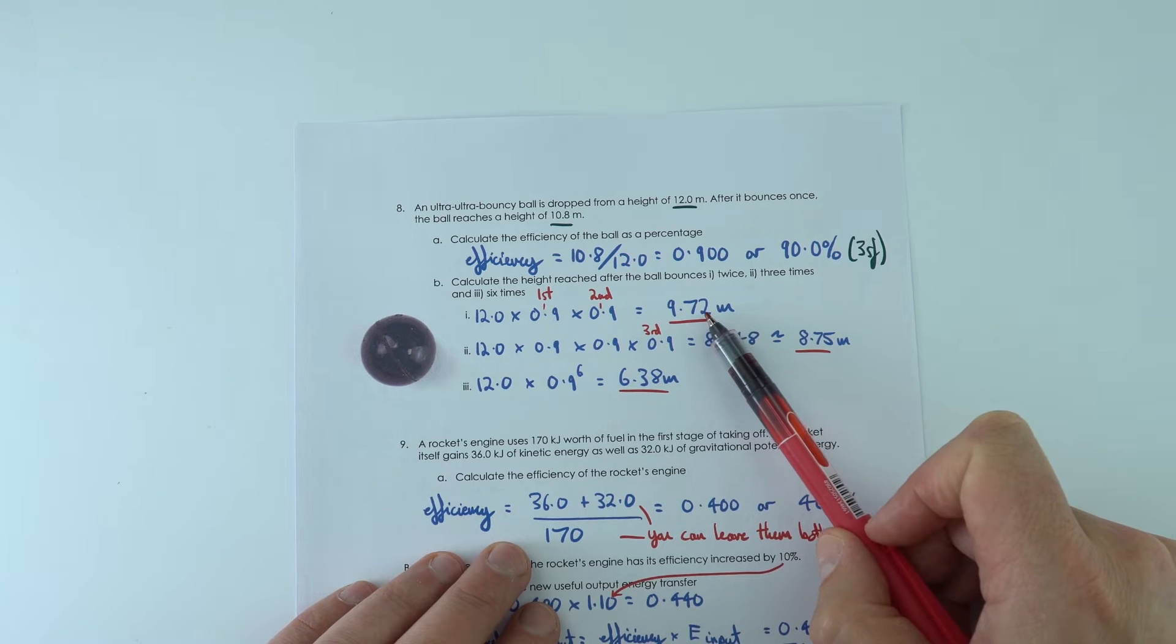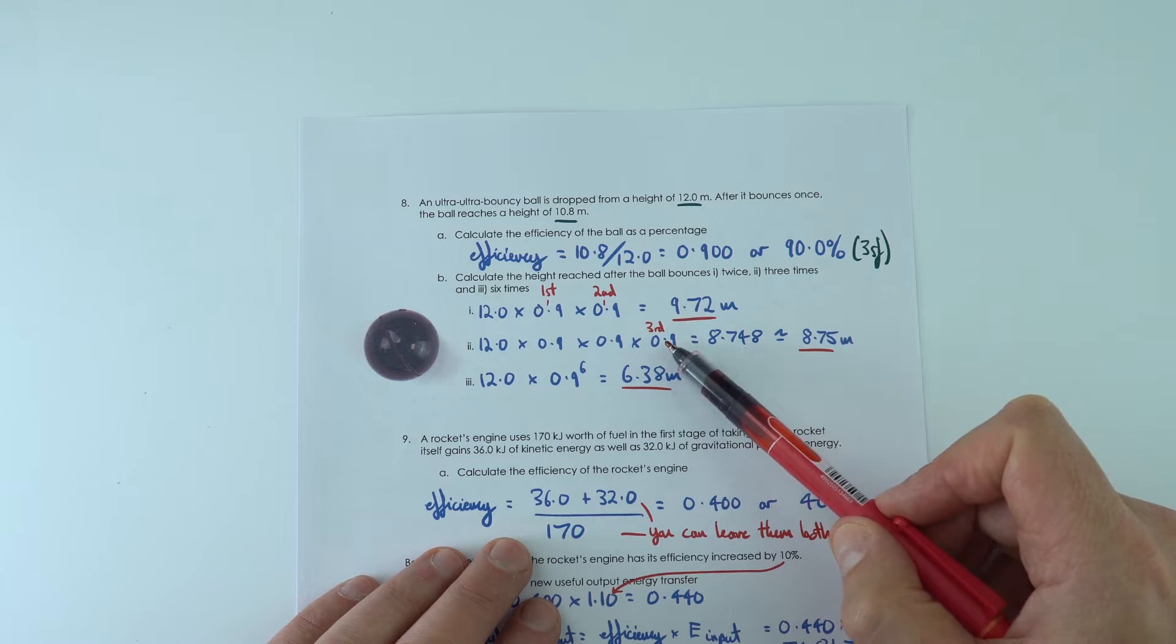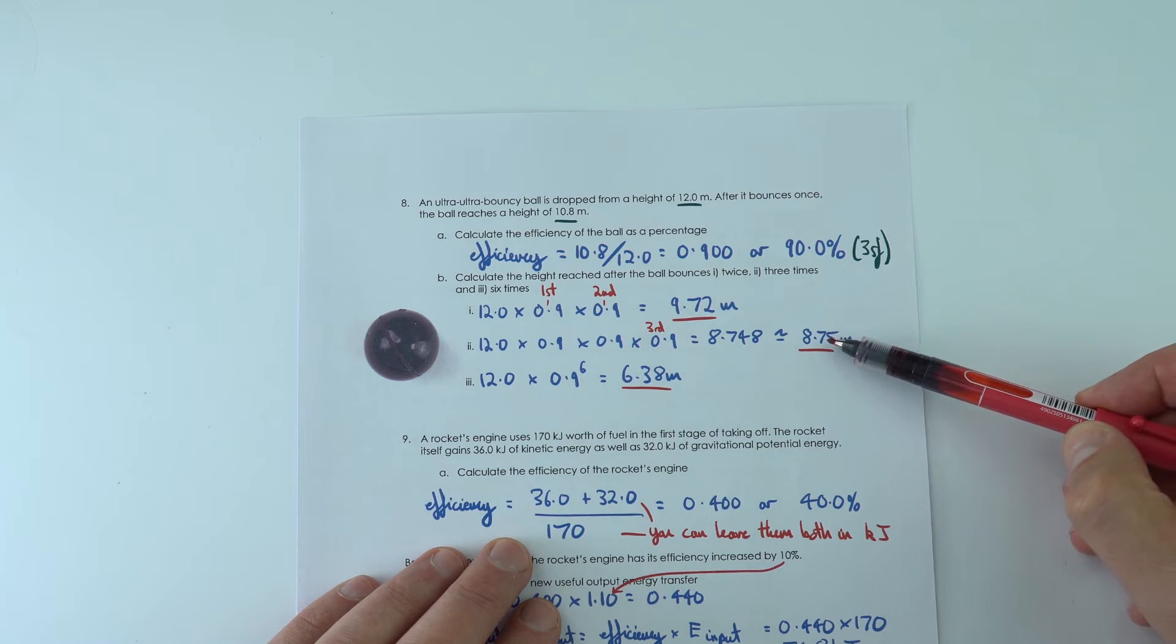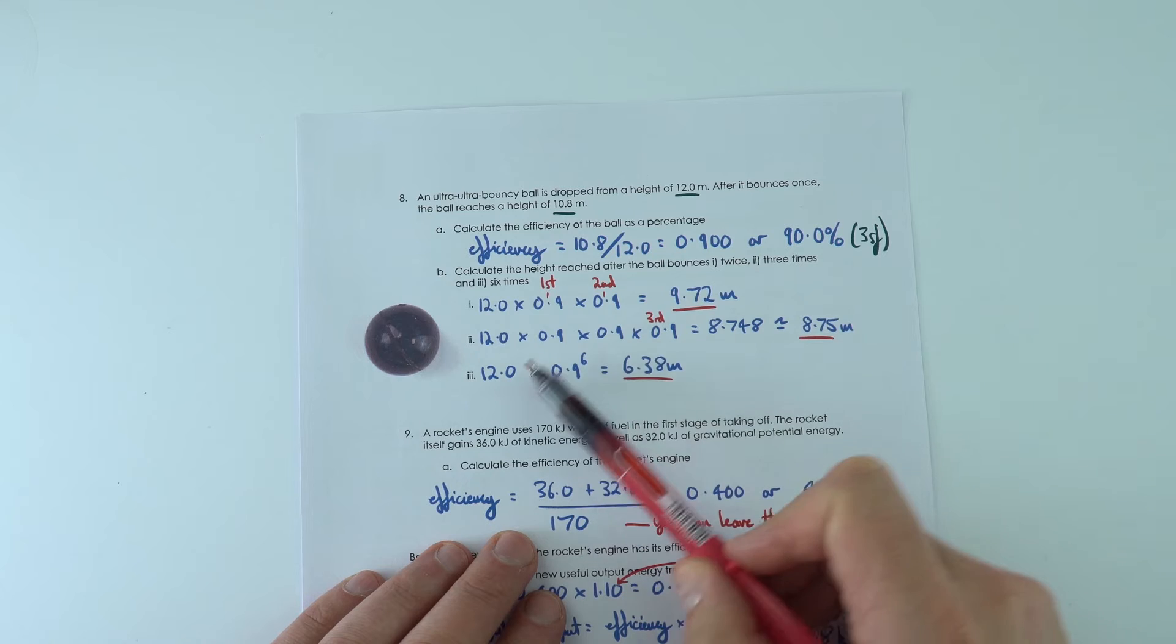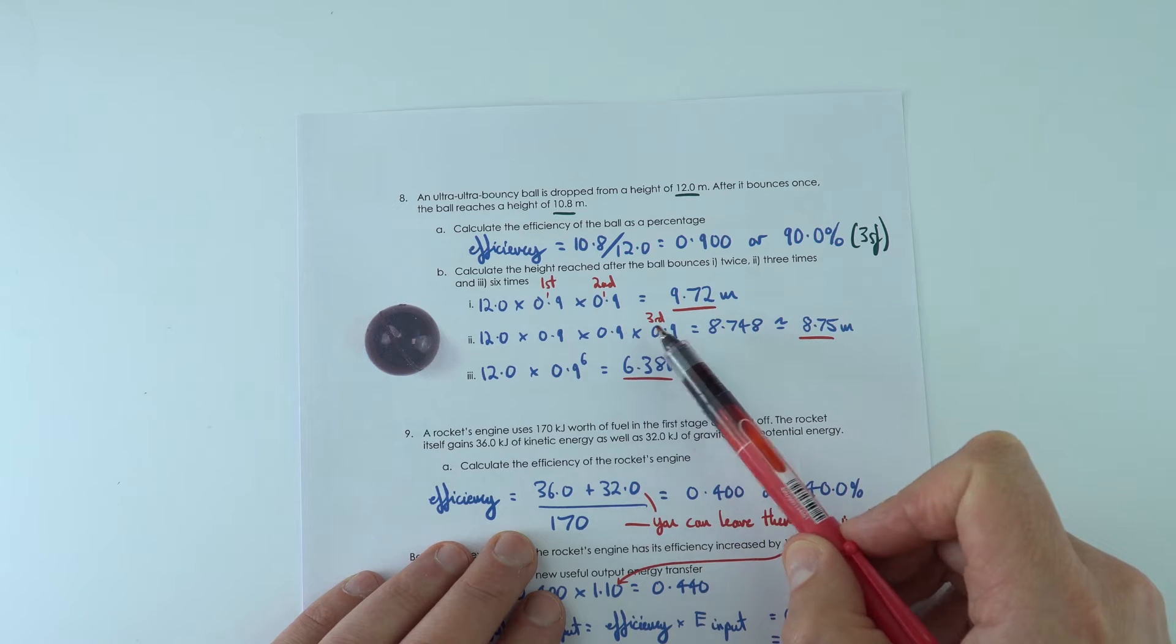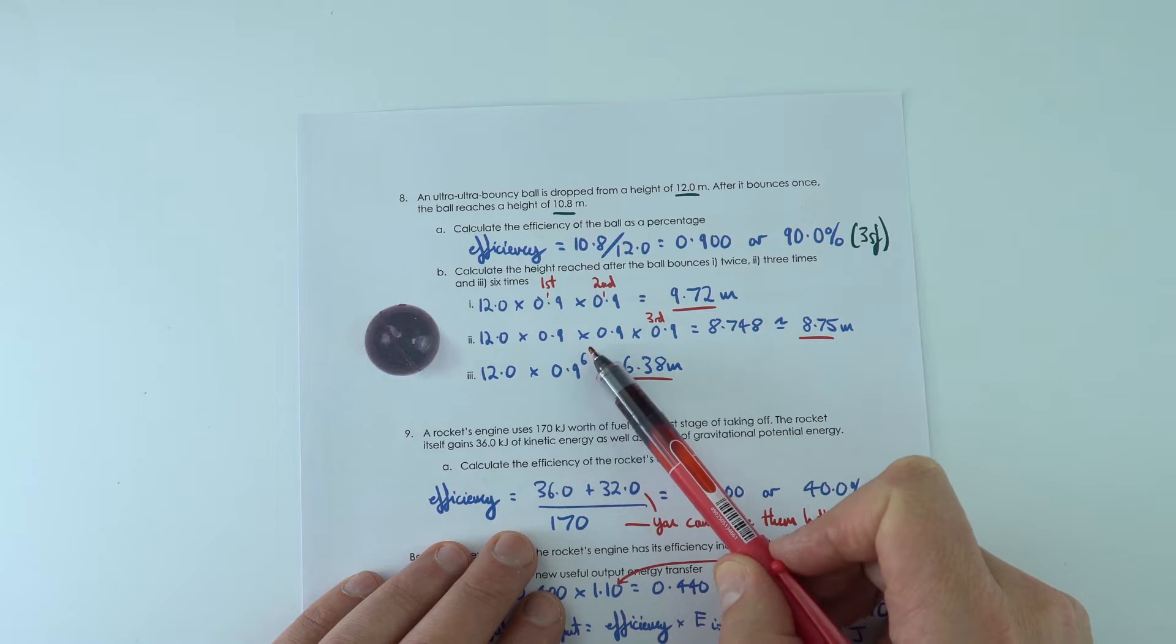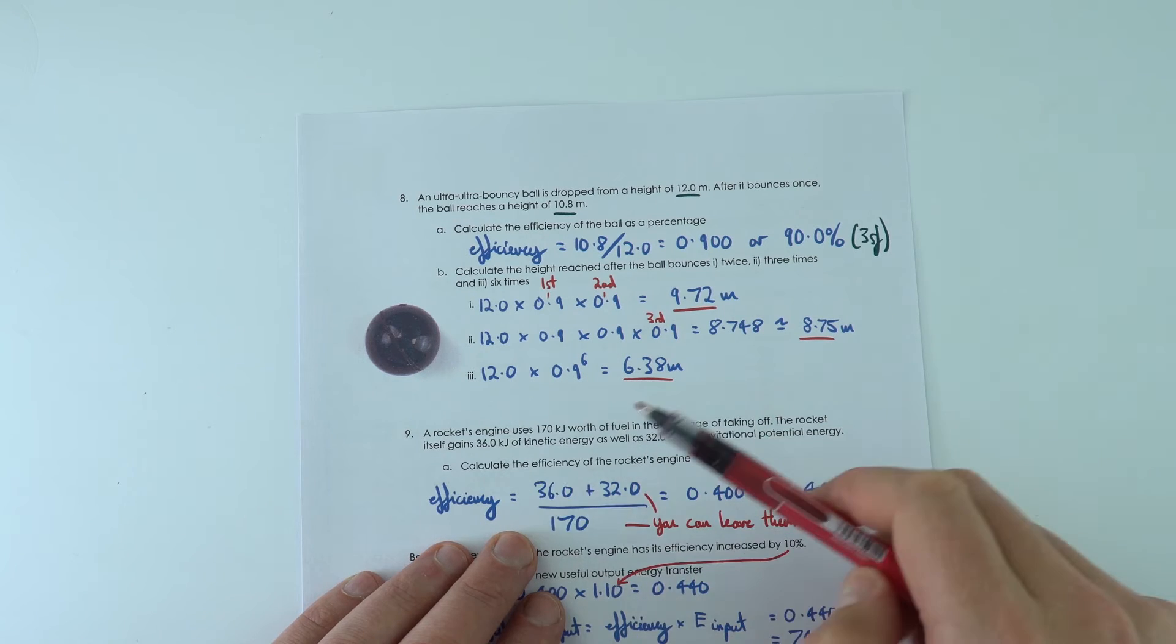It would go to 9.72. We then take this value again, multiply it by another 0.9 to find 8.75. And for this one here you can see the pattern - every time it bounces we're multiplying by 0.9, so after six bounces that's the same as 0.9 raised to the power of six to give 6.38 meters. This is an impossibly bouncy ball.